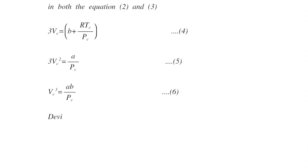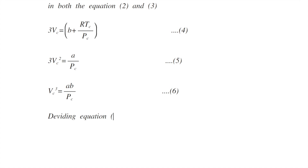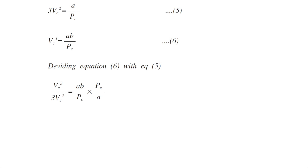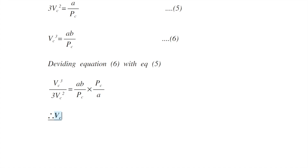Dividing equation 5 by equation 6, we get Vc³ / (3Vc²) = (ab/Pc) × (Pc/a). Cancelling Vc and Pc and a, we get Vc = 3b. This is the equation for critical volume, equation 7.